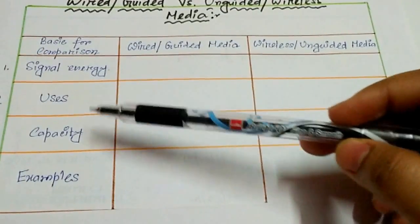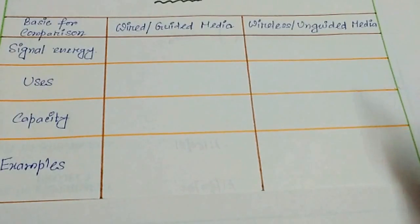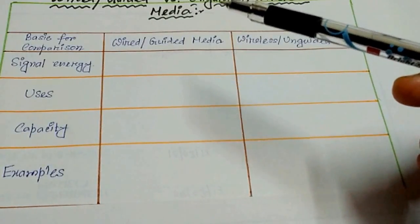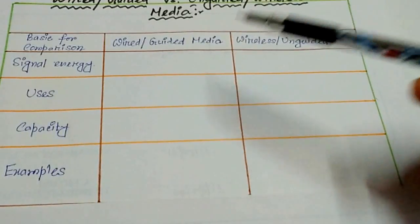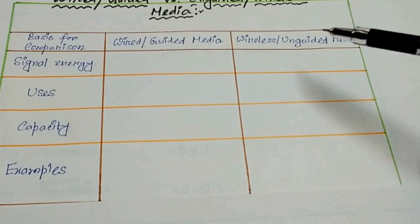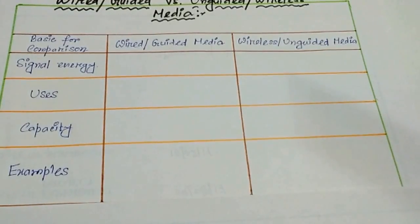The basis of comparison is signal energy, uses, capacity, and examples. The signal energy is conducted in wired media within a solid media, and for wireless the signal energy propagates in the form of unguided electromagnetic waves.